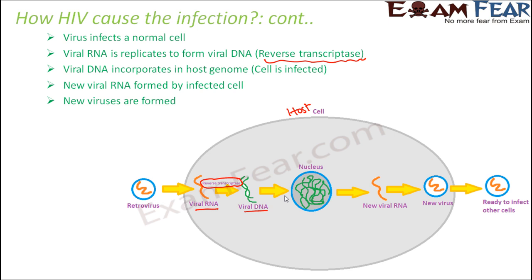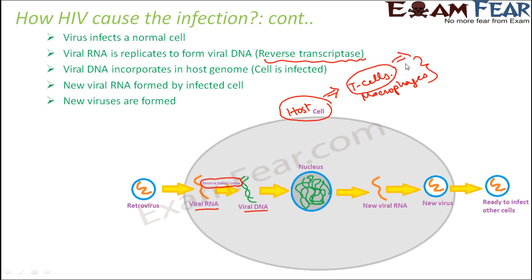HIV attacks macrophages and T-cells — the host cells that are important parts of the immune system. As the infection spreads, the immune system gradually gets damaged. The number of viruses keeps increasing while the number of T-cells keeps decreasing. As the T-cell count reduces, the immunity of the body reduces.